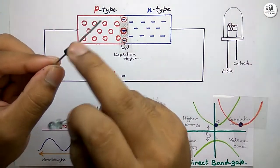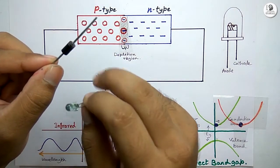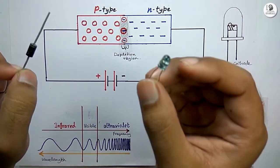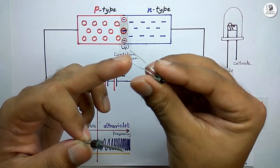Like ordinary PN junction silicon or germanium diode, all LEDs have the same PN junction and two terminals: anode and cathode.